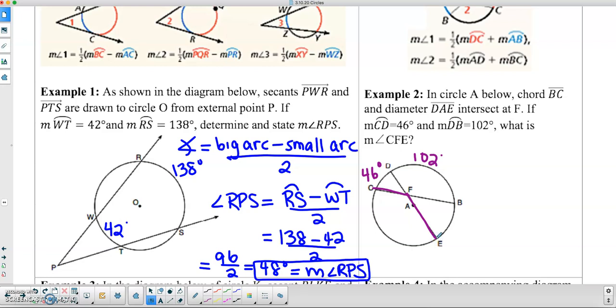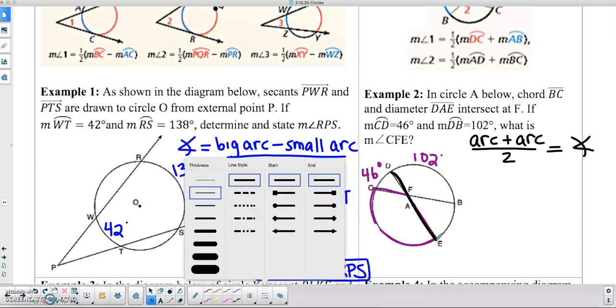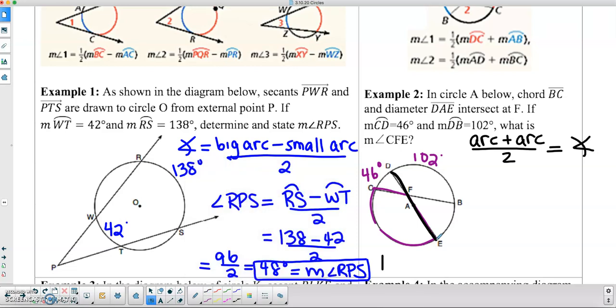So we are going to have to add the two arcs, but in order to do that, I'm going to need arc CE here. Well, in order to figure this out, I know that DE is a diameter. So because DE is a diameter, it cuts the circle in half. So in order to find the measure of arc CE, what we're going to have to do is take 180 degrees and then subtract 46, which will give us 134 degrees. So I know that the measure of arc CE is 134 degrees.